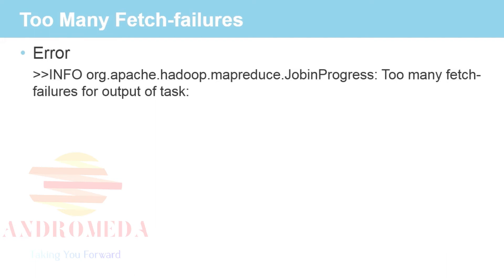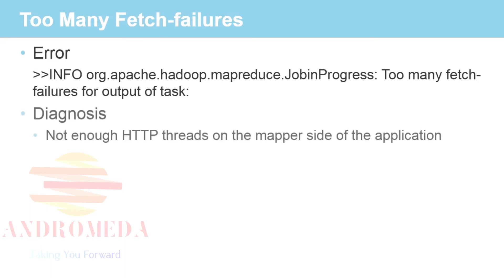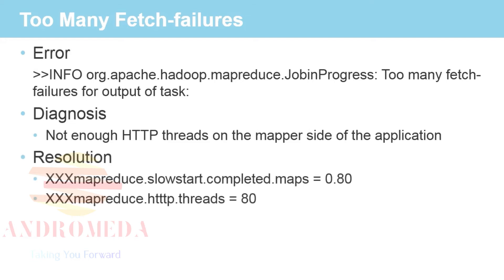Too many fetch failures. We had an error message that said too many fetch failures for output of task. This was a difficult one to troubleshoot. We spent a lot of time looking through the logs to find alternative error messages. Eventually, we determined that there was not enough HTTP threads on the mapper side of the application. We actually got this from the application developer.